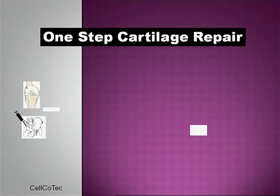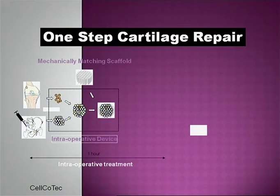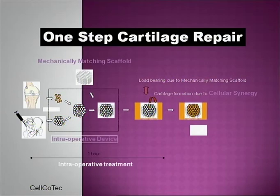This could be used in cartilage repair as a one-step technology currently under clinical trial, where cells from cartilage — chondrocytes — are mixed with bone marrow cells and put into a scaffold, which is then placed into the cartilage lesion. The patient begins to bear load, and over time cartilage forms by what we call cellular synergy.